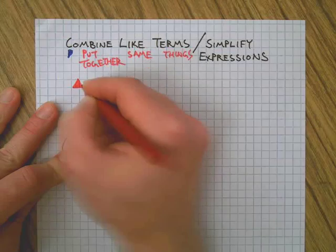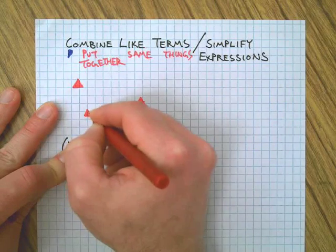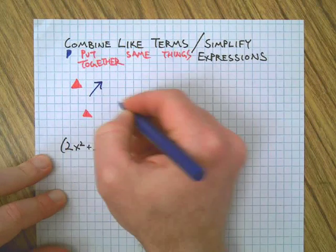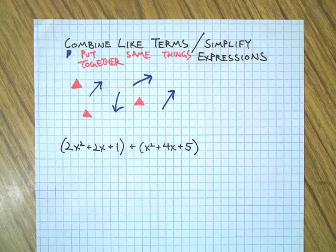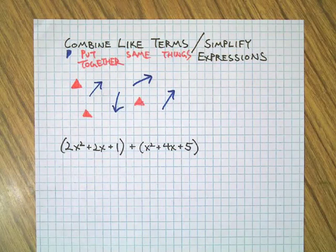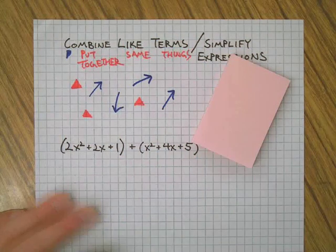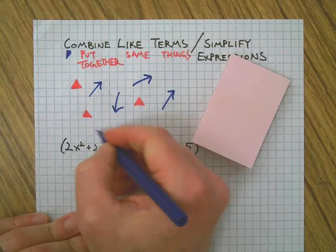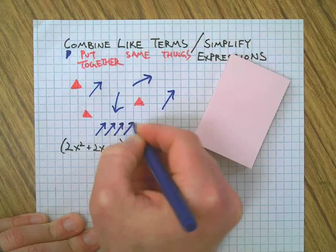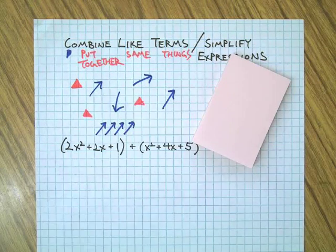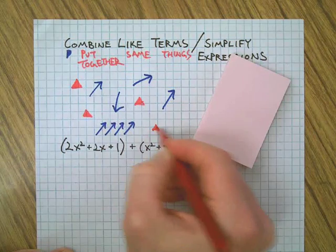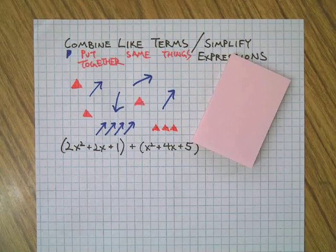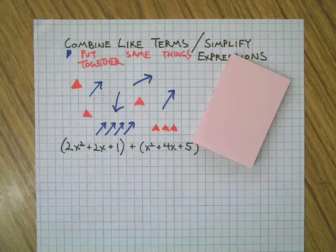if I have some little red triangles, and I have some arrows, and a pile of post-it notes, and I say combine like terms, I'd say, oh, I have four blue arrows, so I put them together, and I have three red triangles, put them together, and I still have a pack of post-it notes. That's it. Combine like terms. Put the same things together.